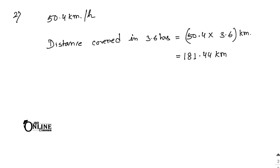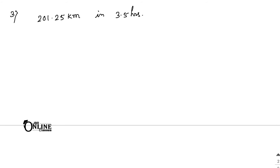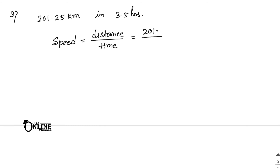Sum number three: a car covers 201.25 kilometer in 3.5 hours — find the speed of the car. Speed = distance ÷ time, so speed = 201.25 ÷ 3.5.